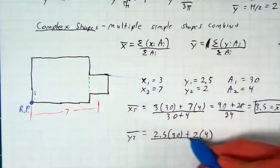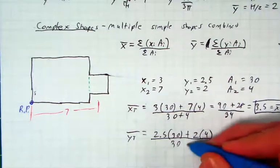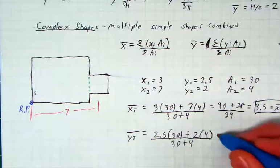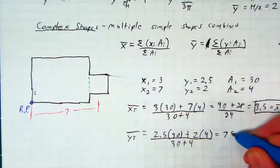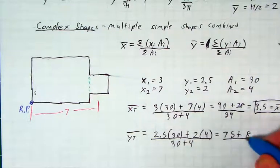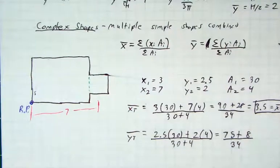And we'll divide that by the area plus the other area, which is just 30 plus 4. We get 2.5 times 30 is 75, plus 2 times 4 is 8, and 30 plus 4 is still 34. That hasn't stopped being true.